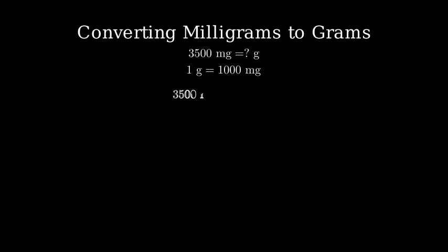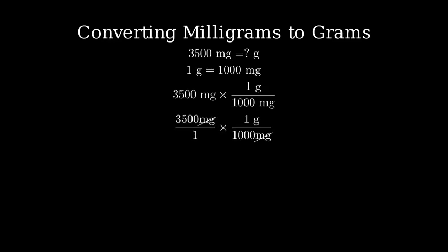We set up the conversion like this. We start with 3,500 milligrams and multiply by a fraction representing the conversion factor. The milligrams cancel out, leaving only grams. This simplifies to 3,500 divided by 1,000, which equals 3.5 grams.